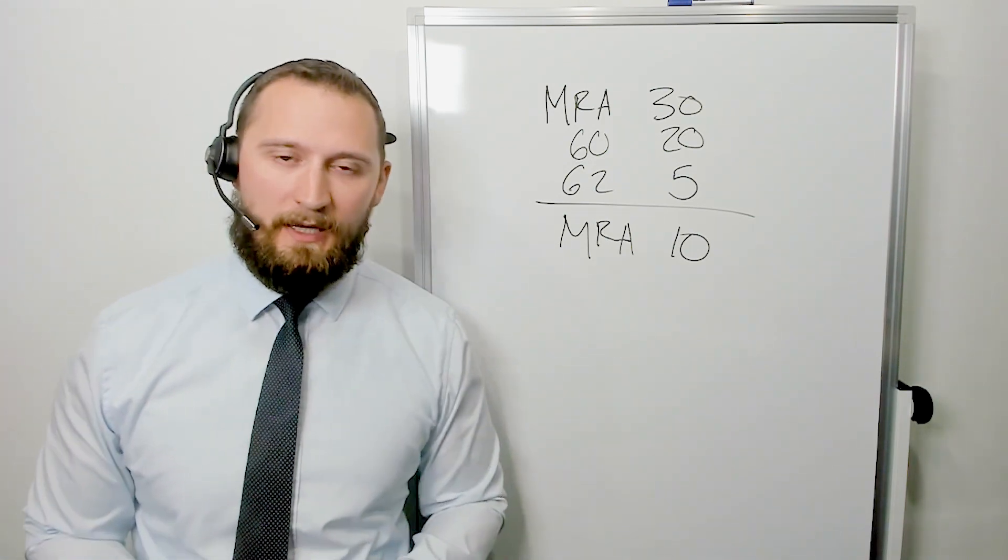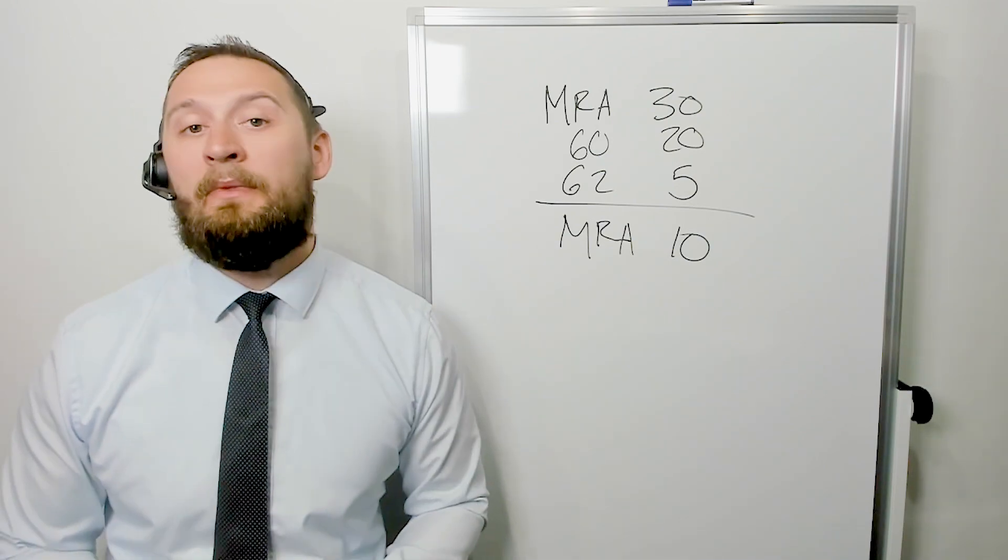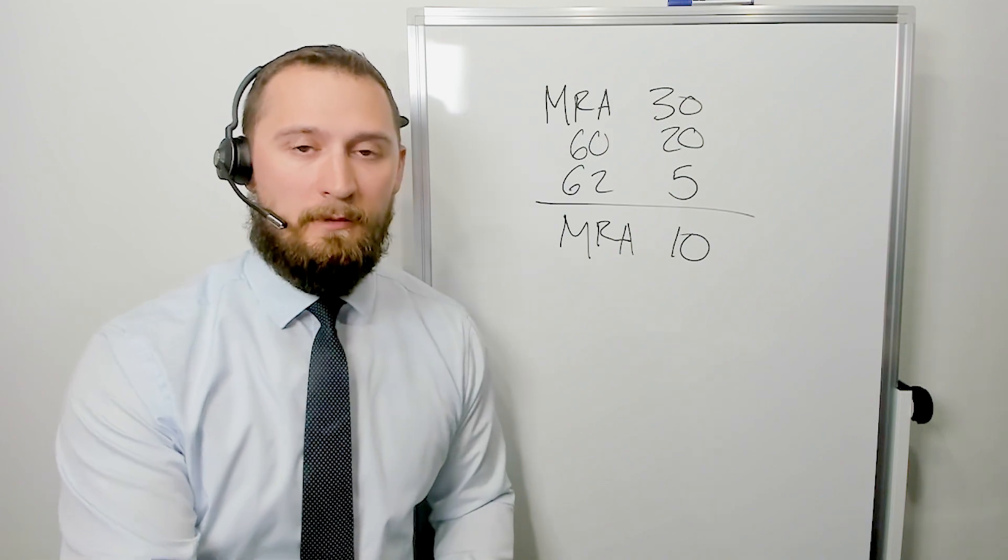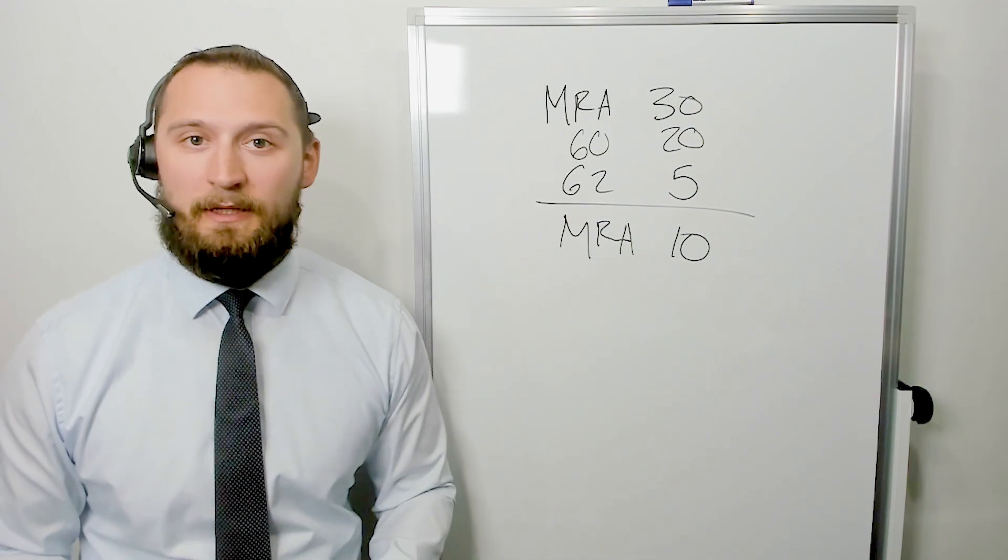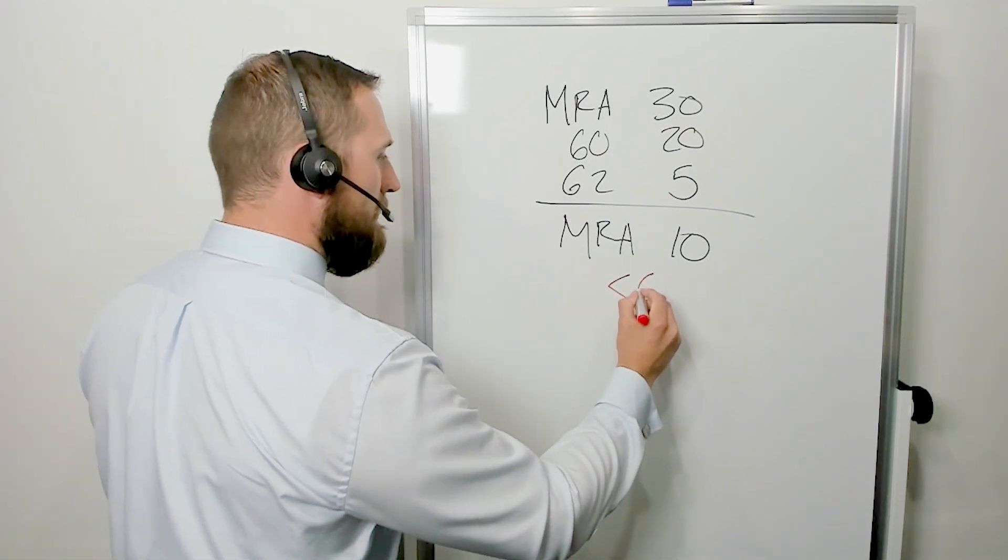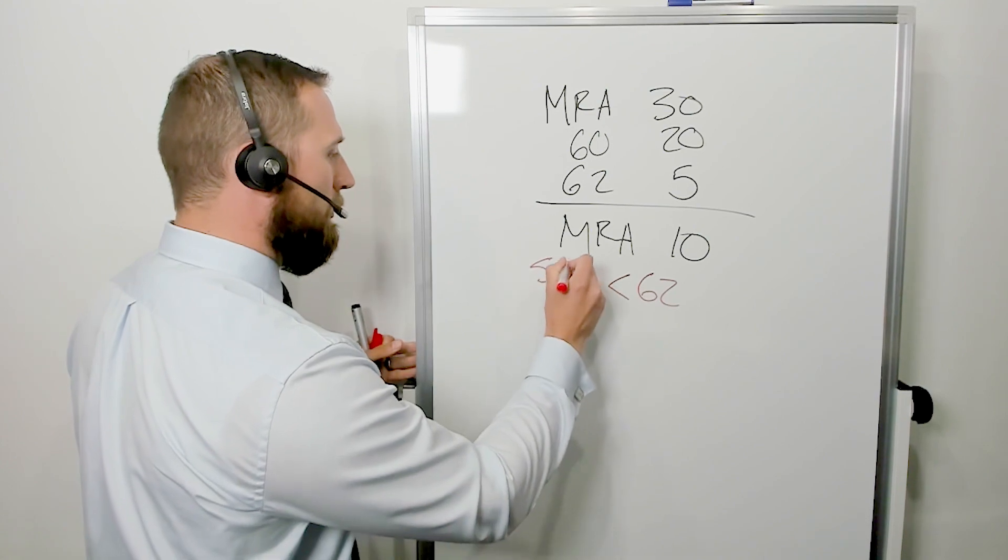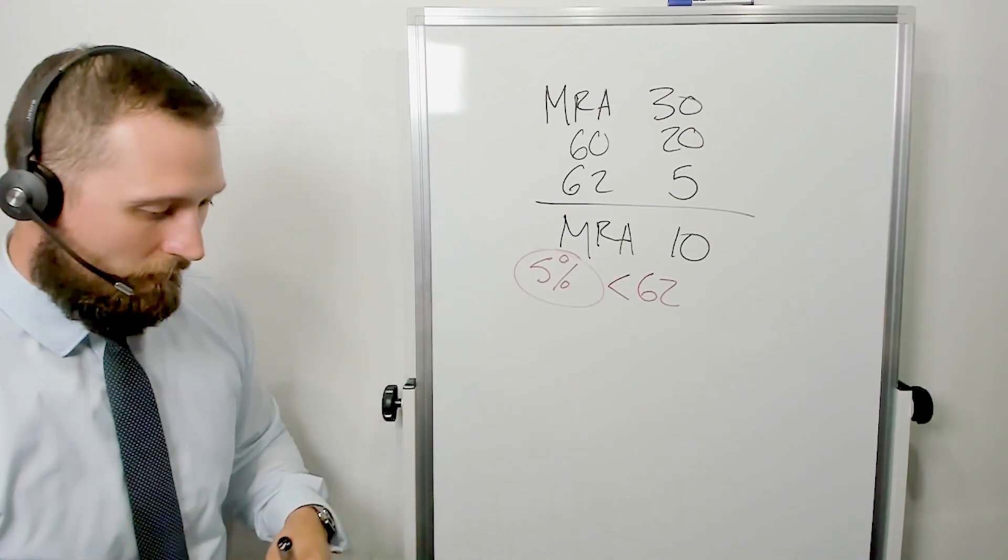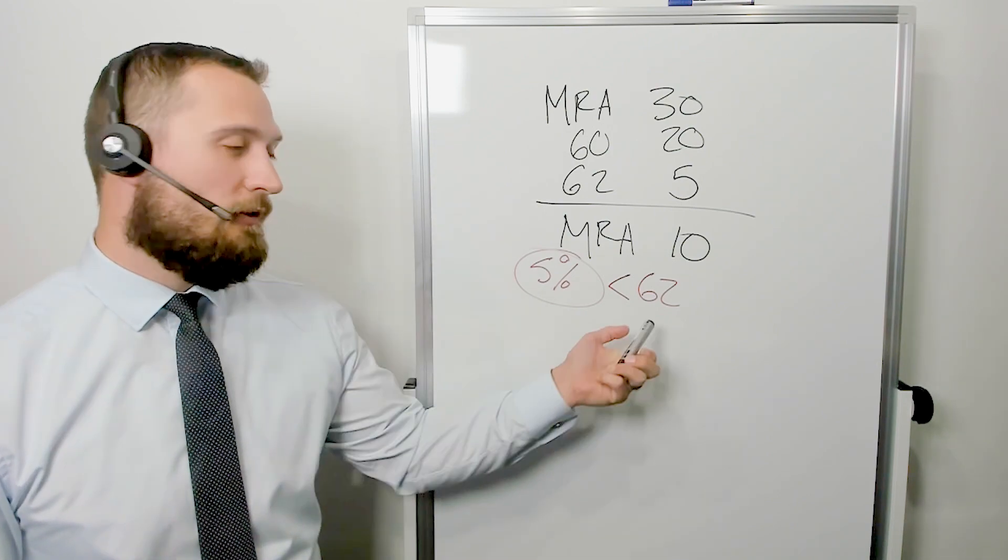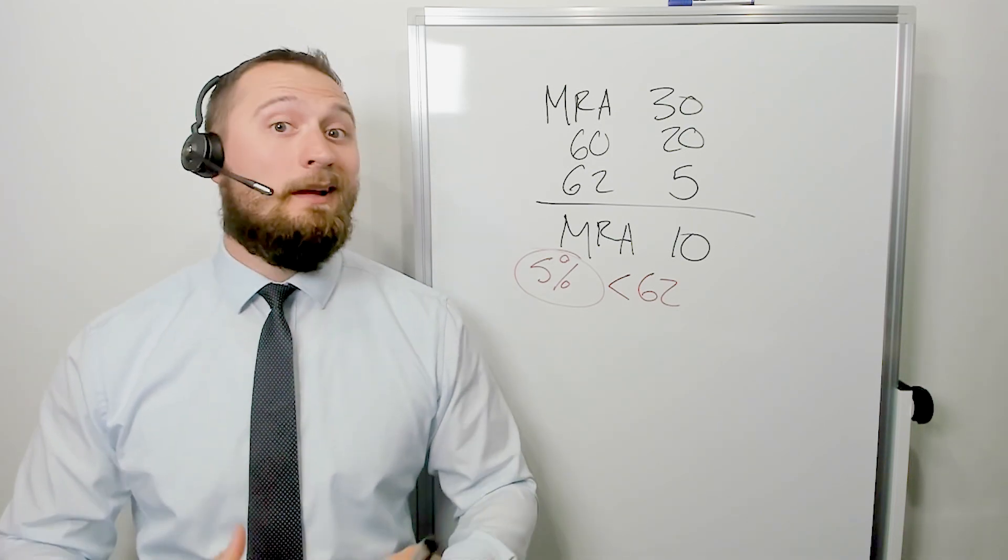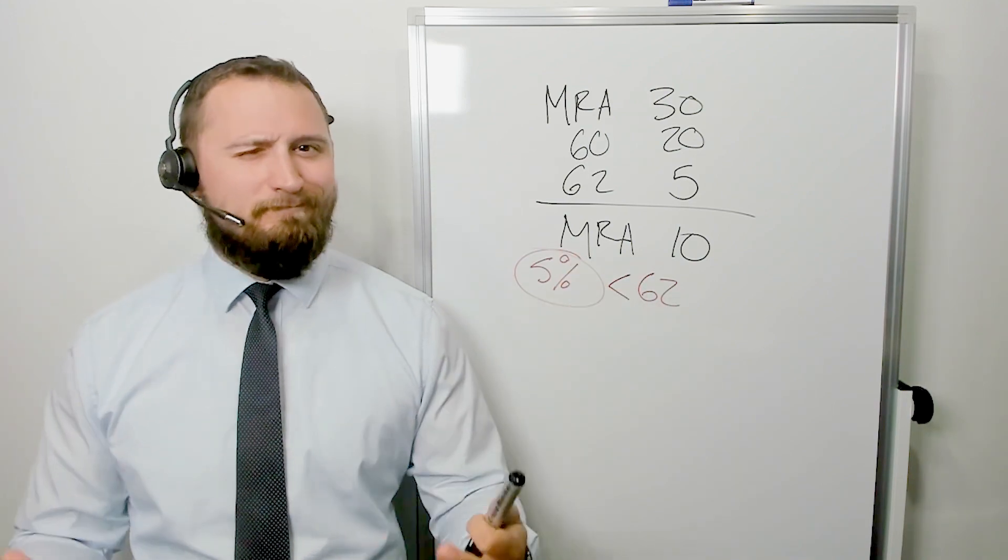We call that an MRA plus 10 retirement. And at this point, we have a couple of options. When we have an MRA with 10 years of service, we can choose to turn on our pension at our minimum retirement age. But it comes with a permanent penalty. And that permanent penalty is for every year you start your pension earlier than 62, there is a 5% per year permanent penalty. I want to emphasize that. So let's say you started your pension at 57. That's five years younger than 62. Five years times 5%. That's a 25% permanent penalty for turning on your pension with an MRA plus 10 retirement. Not ideal.